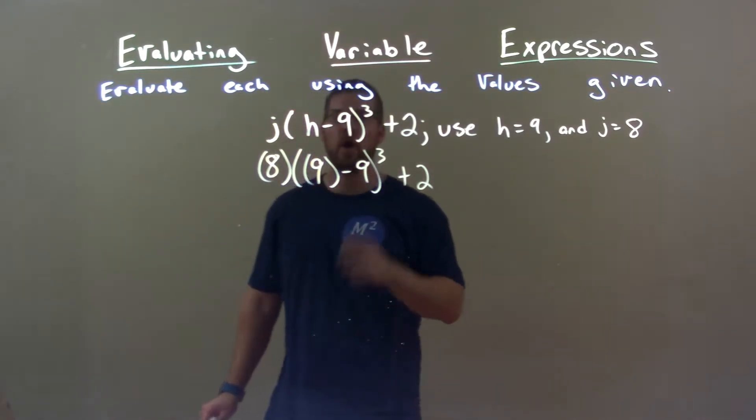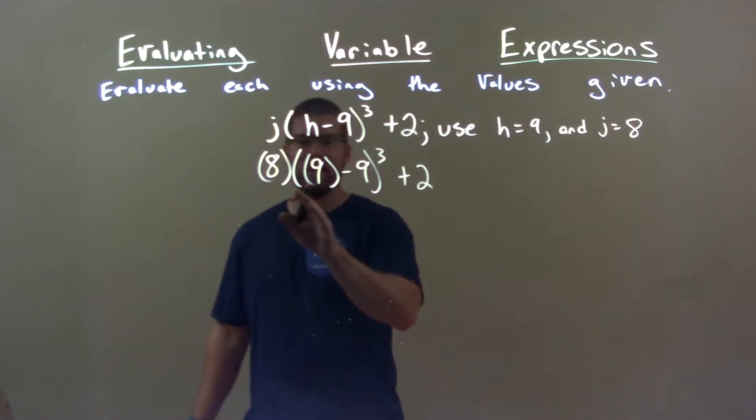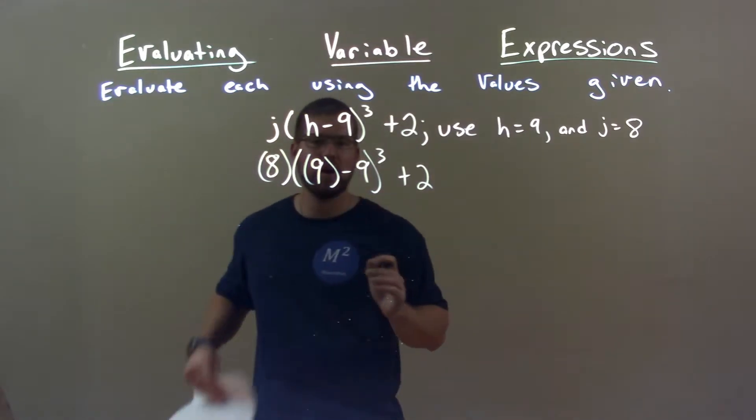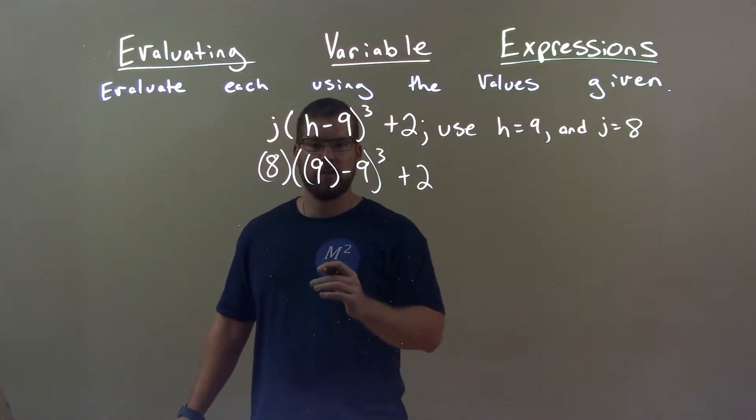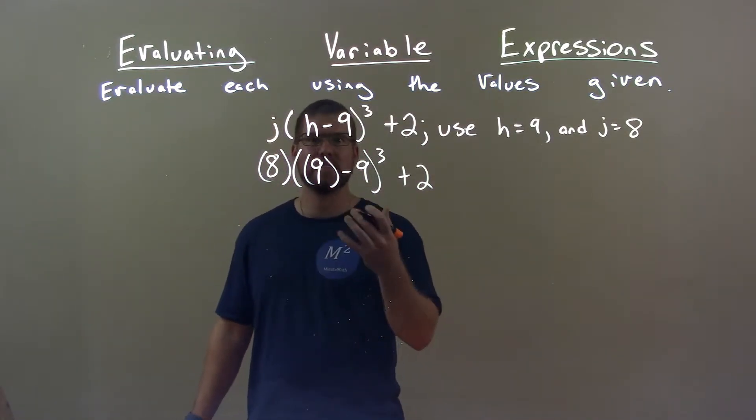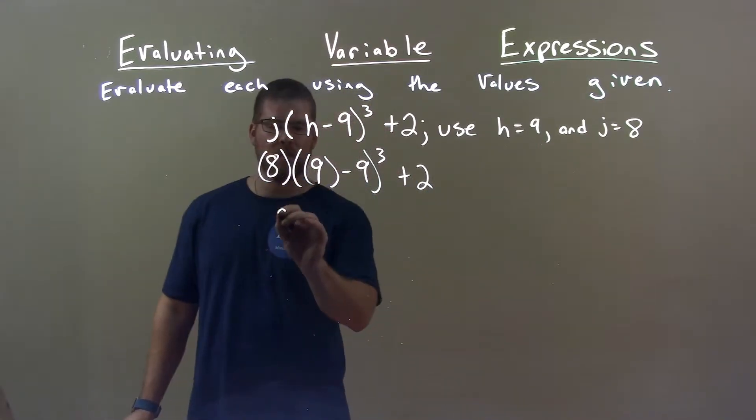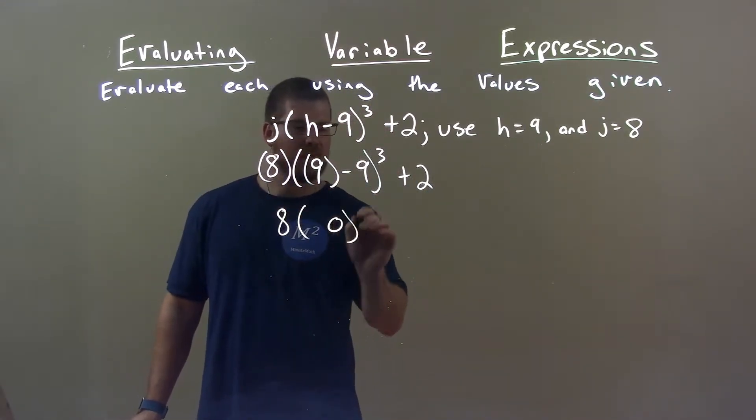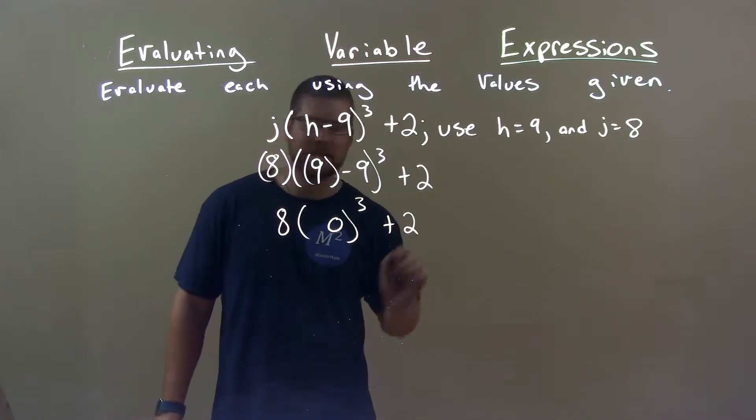Now we just simplify. Order of operations says within this big parenthesis right here, we need to simplify first. 9 minus 9 is 0. Anything subtracted by itself is 0. So 8 times 0 to the third plus 2.